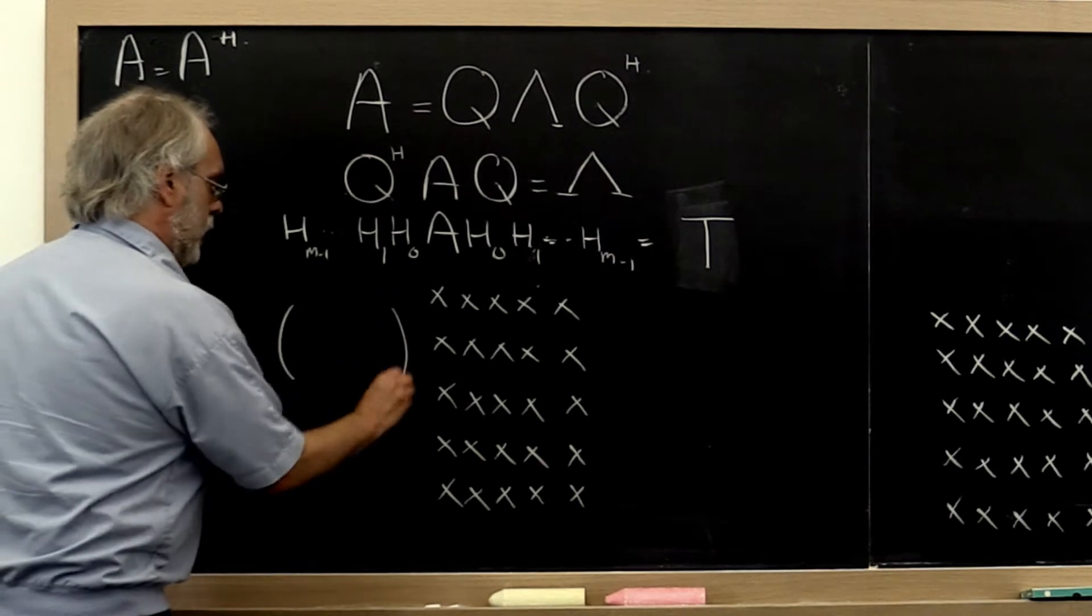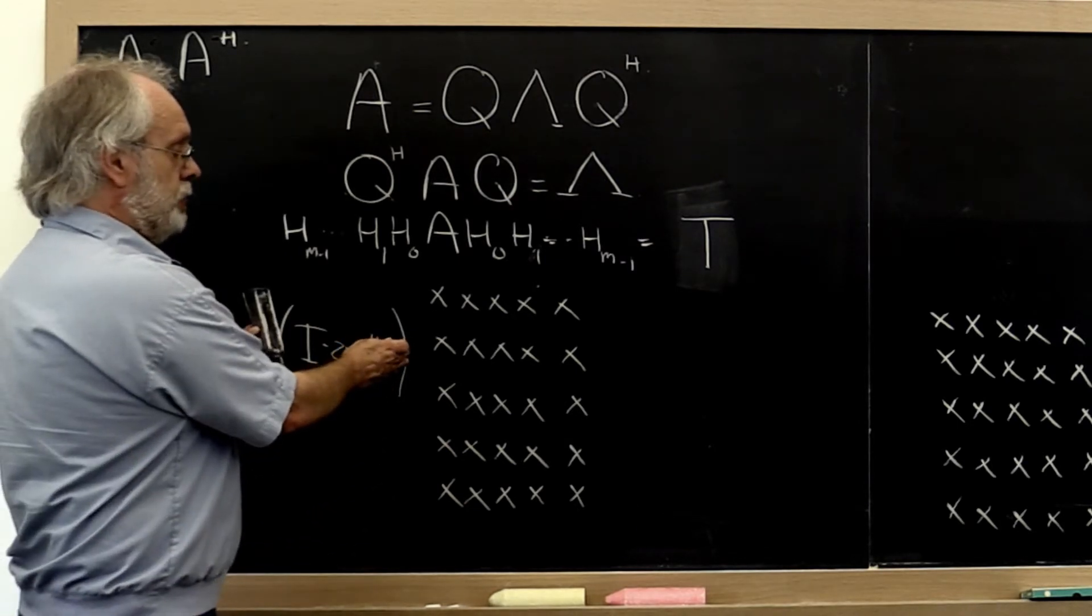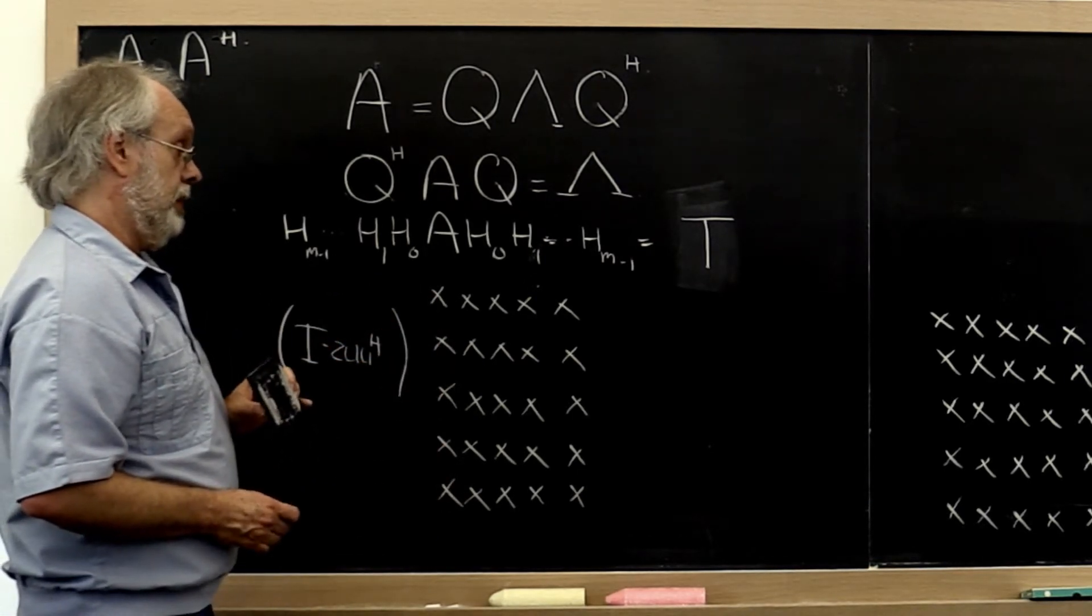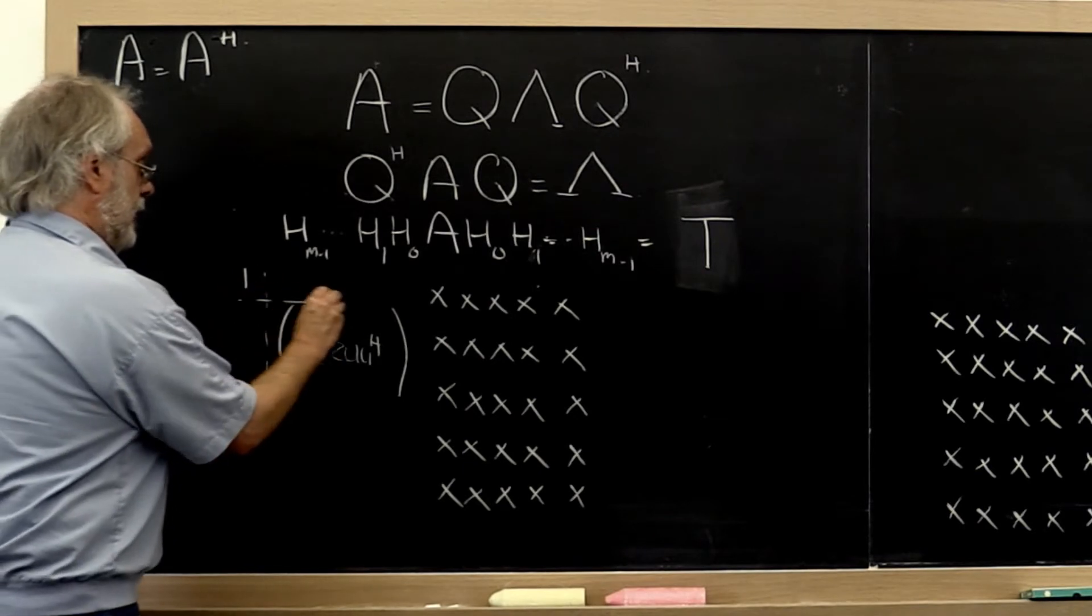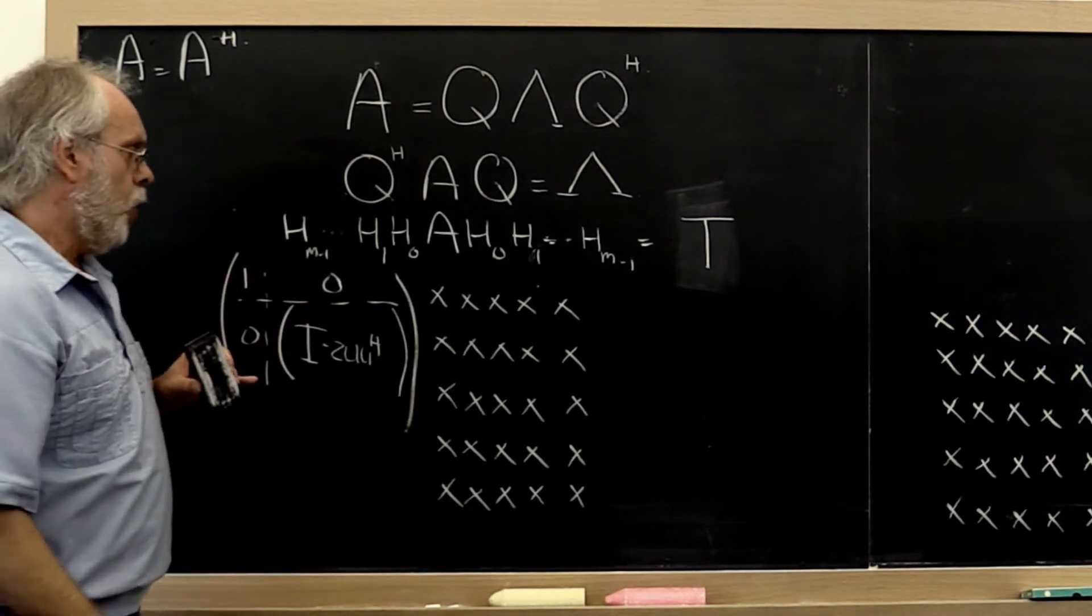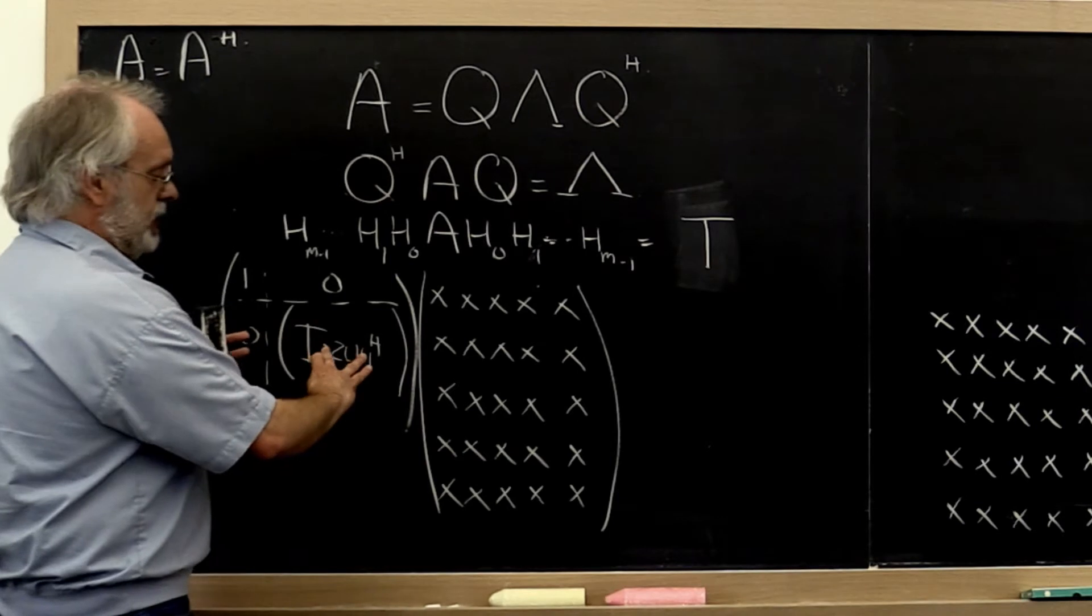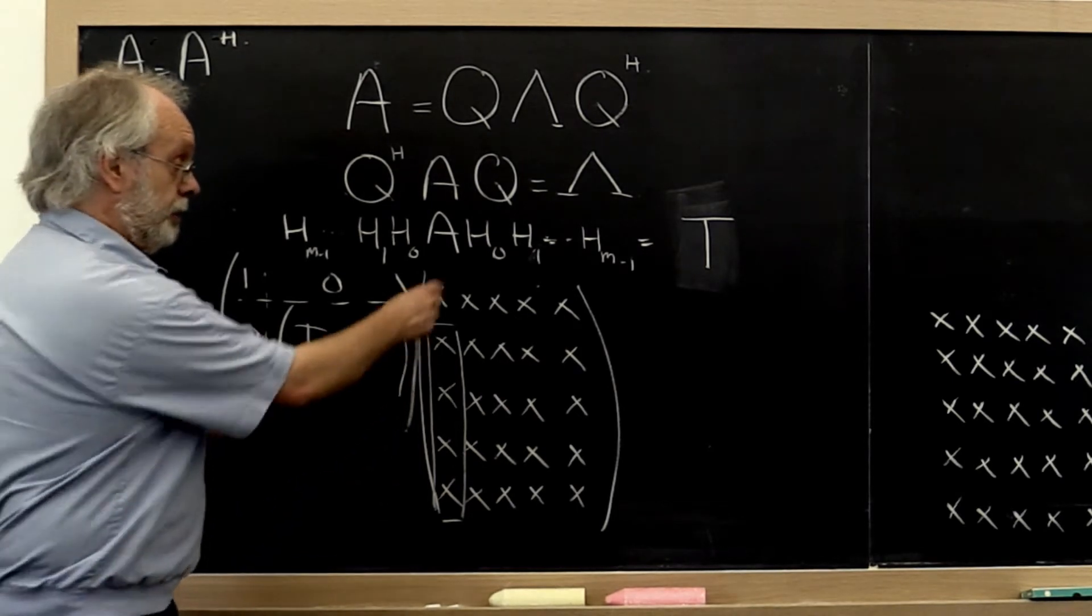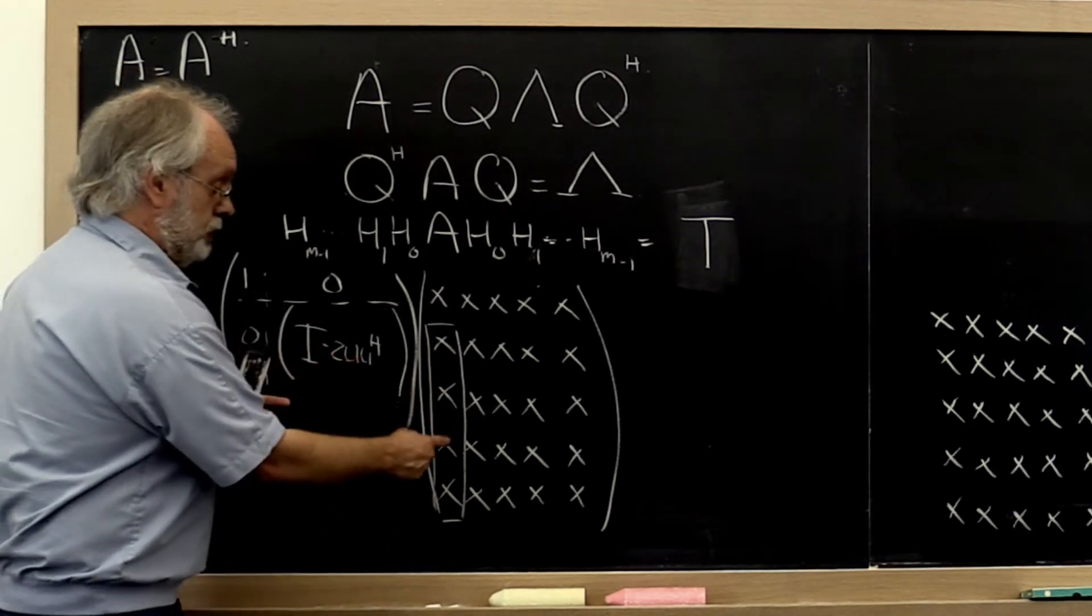We learned how to compute a Householder transformation such that if we apply that Householder transformation, we introduce zeros right here, all of the entries below the first diagonal entry. What we are going to do instead now is we're going to create such a Householder transformation but with a 1 in the top left corner and zeros here. What did we learn happens if you apply that to a matrix? If we choose this Householder transformation and compute it from this part of the first column instead of the full first column, then this Householder transformation can be created to introduce zeros right here.